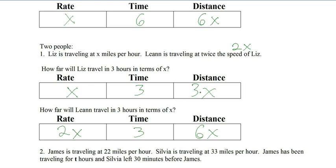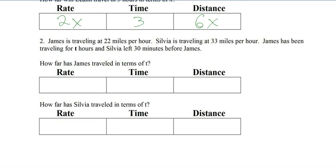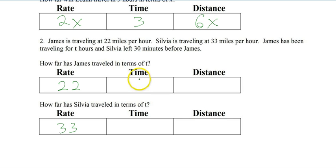This is how it's going to look with 2 problems — you're going to be given 2 values, plug them in for each, and multiply. This is the last warm-up. We have James and Sylvia. James has been traveling at 22 miles per hour, Sylvia is traveling at 33 miles per hour. James has been traveling for t hours, so James is done — he's at 22t for his formula.